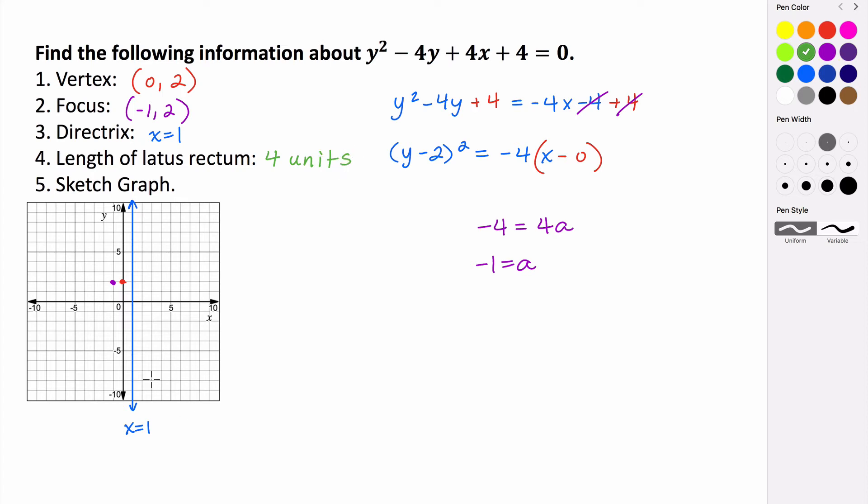So the way that we plot the latus rectum, the endpoints of the latus rectum, is its total length is 4 units, and it's bisected by the focus. So that means we go 2 units above. Half of its length is above the focus, and half of its length is below the focus. So there are 2 points of the latus rectum. This is our focus, and then the red point is our vertex.